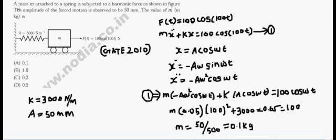GATE 2010: A mass M attached to a spring is subjected to a harmonic force. The amplitude of forced motion is observed to be 50 mm. The value of M is unknown. K equals 300 N/m. The wall is fixed.